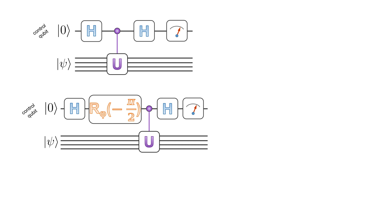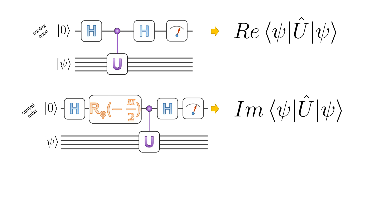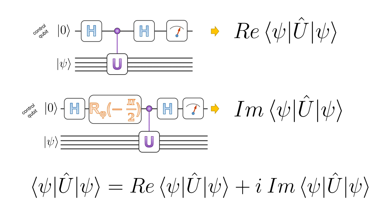The Hadamard test consists of two quantum circuits, one for the real part and one for the imaginary part of the expectation value which we want to calculate. In both cases, we will measure the control qubit, and the expectation value of the measurement result will be equal to the real or imaginary part of the desired expectation value. The final expectation value can then be calculated as a sum of real and imaginary parts.